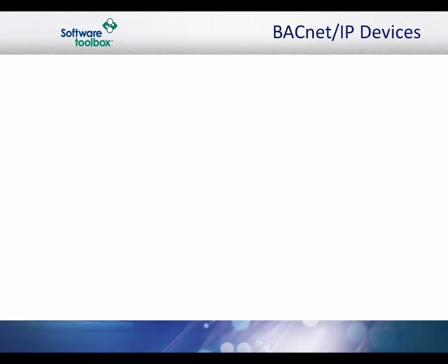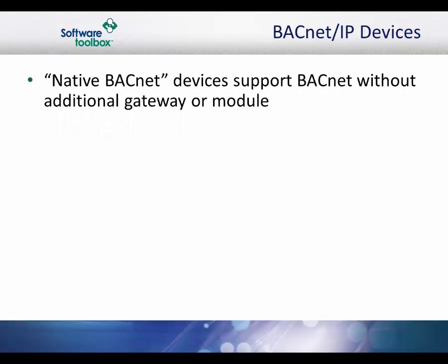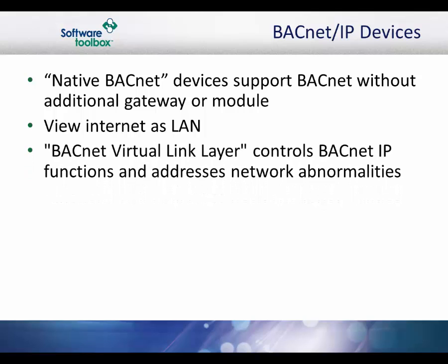The development of BACnet IP provided not only the specification for moving BACnet messages between IP devices, but also the base for accepting other new networking technologies with minimal impact on existing BACnet technology. If a device supports the protocol without the addition of a gateway or other module, it is called a native BACnet device. BACnet IP devices view the internet as if it were a local area network. The IP address of a device serves the same purpose as the device's MAC or physical LAN address in other BACnet networks. The protocol uses a BACnet Virtual Link layer to control all of the BACnet IP functions. This layer provides a string of messages that are used to address specific abnormalities of IP networks, including the behavior of broadcasts.